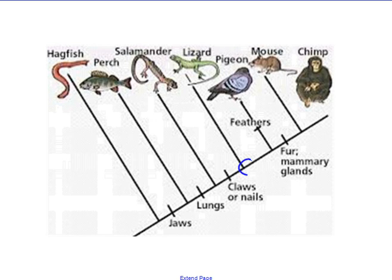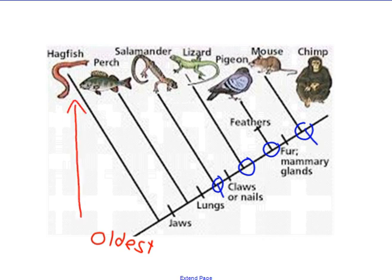So number one, what a node is. We have lots of nodes on this cladogram. So these are branch points and they indicate a common ancestor. So the common ancestor of a mouse and chimp is right here. The common ancestor between a salamander and a chimp is right here. This is down here is the oldest and we go to present day.